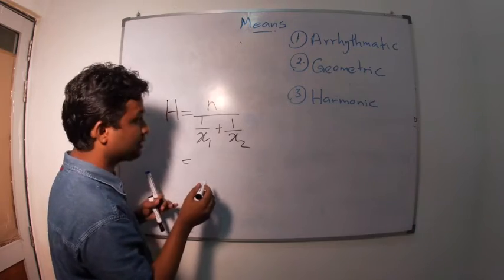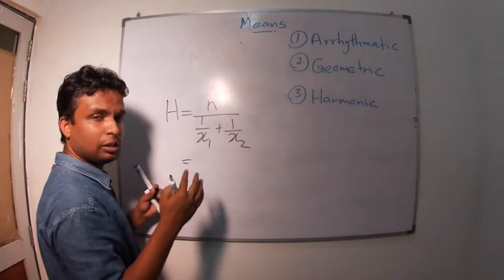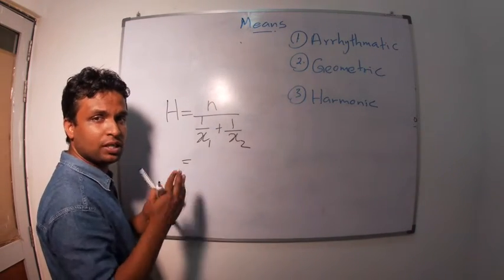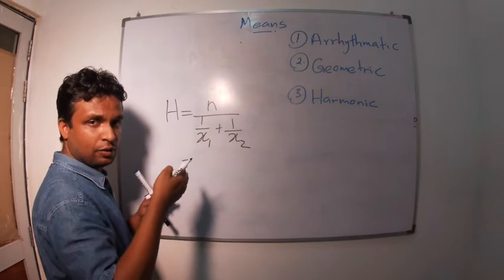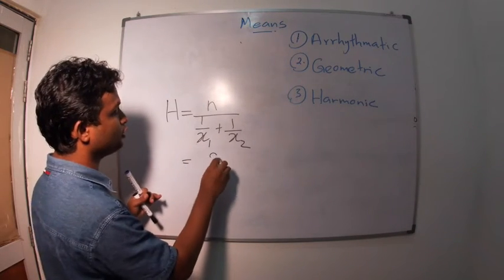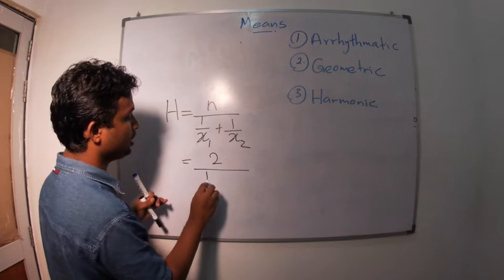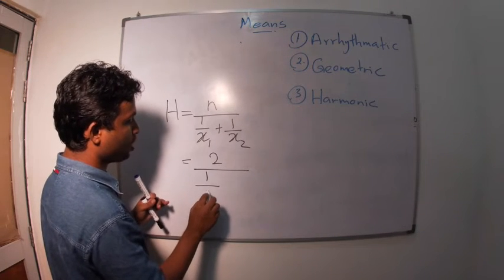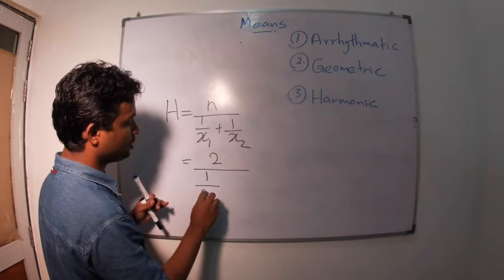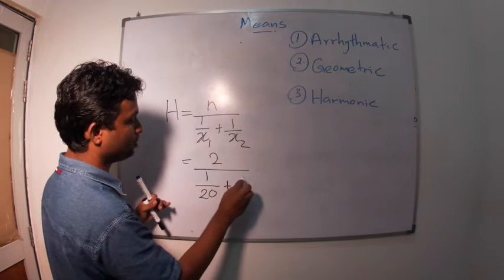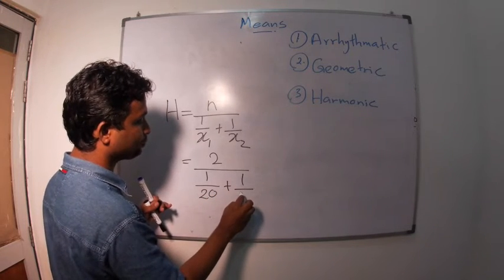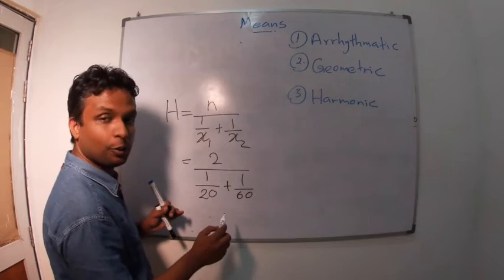If you can remember the example, n is the total number of events. So, we have two events. One is 20 kilometers per hour and then 60 kilometers per hour. So, n equals 2 divided by the speed is 1 divided by 1 divided by 20 kilometers per hour, 1 divided by 60 kilometers per hour.